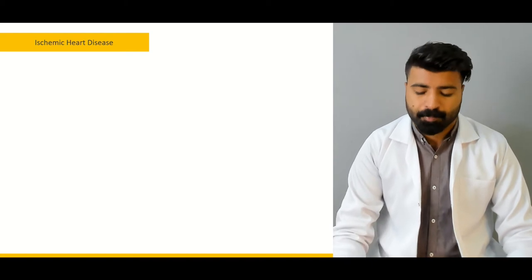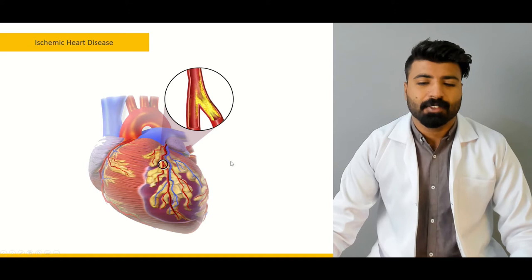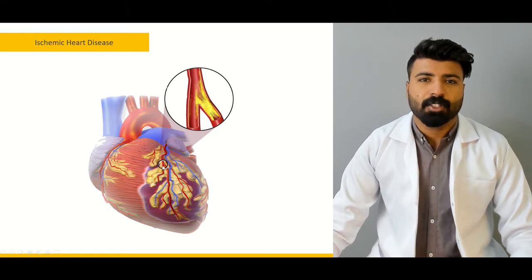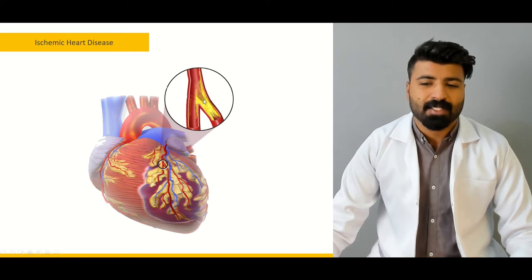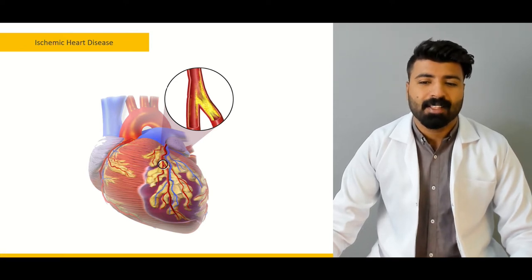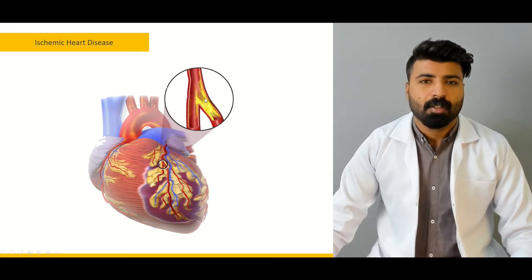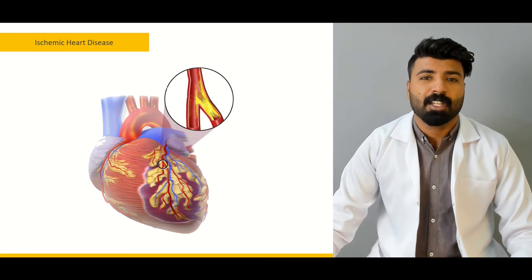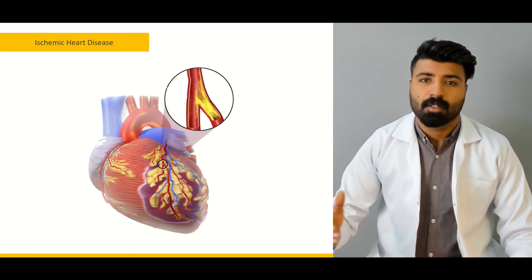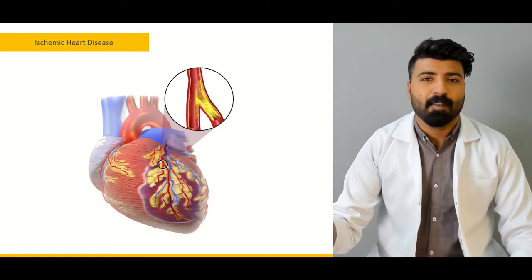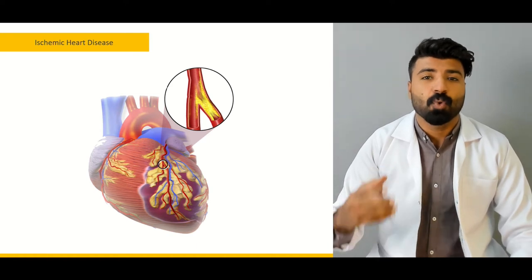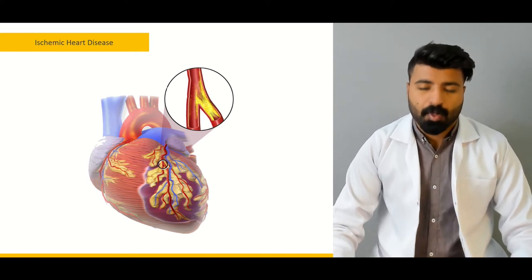The heart won't be able to pump, contract properly, or relax properly - that's why ischemic heart disease is very important. These are coronary vessels supplying the heart. From the outside they look normal, but inside you can see plaque formation, atherosclerotic formation, and emboli formation - any of these can stop blood supply to a region of the heart. Whatever region is supplied by that vessel won't be supplied, leading to ischemia and cell death.